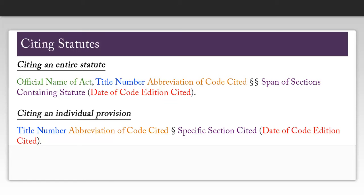You can also cite an individual provision within a statute. For this, you just need the title number, the abbreviation of the code cited, the section symbol, the specific section cited, and the date of the code edition cited.